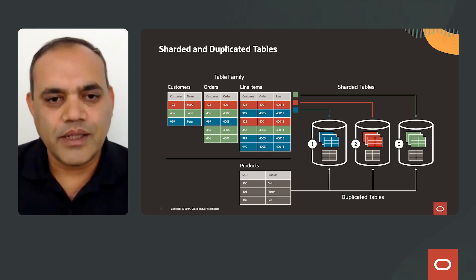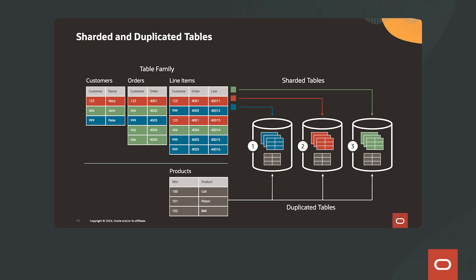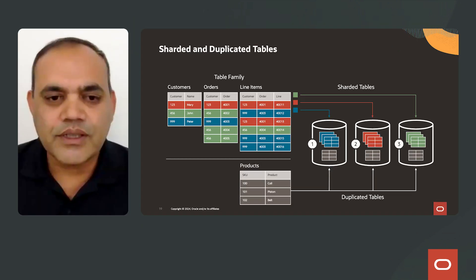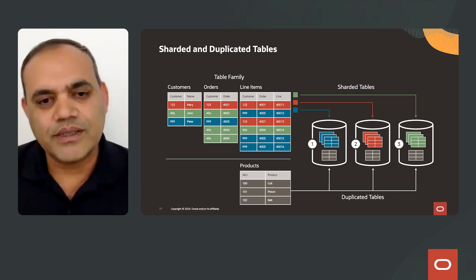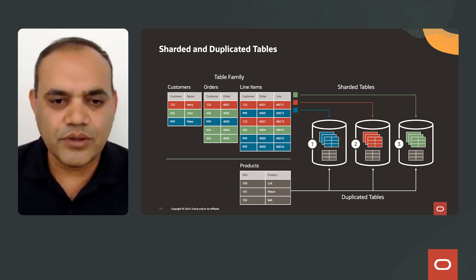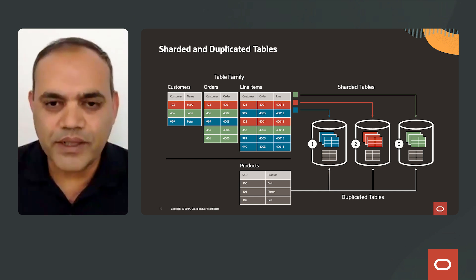Likewise, John's data, shown in green, across all tables is co-located on shard number three. And Peter's data, shown in blue, is co-located on shard number one. This allows joins to be executed in a very optimal manner — all joins are satisfied locally on a given shard. Additionally, all constraints are also satisfied on a given shard. For dimension or reference tables, such as a product catalog, the data is automatically replicated across all shards. Such tables are called duplicate tables.